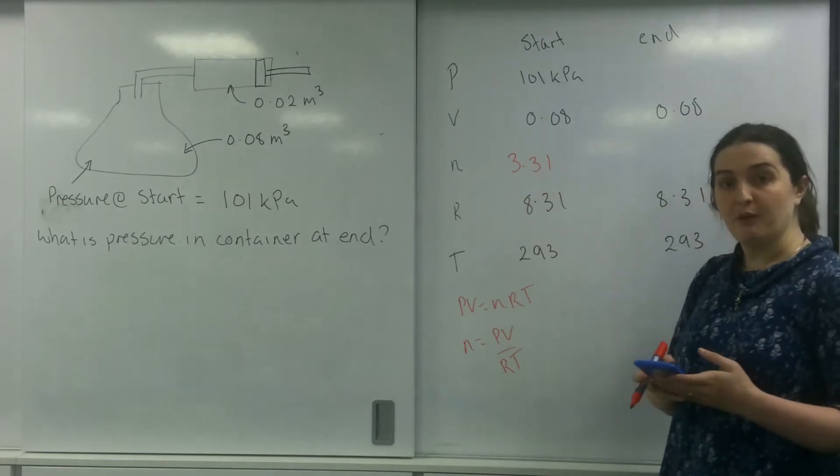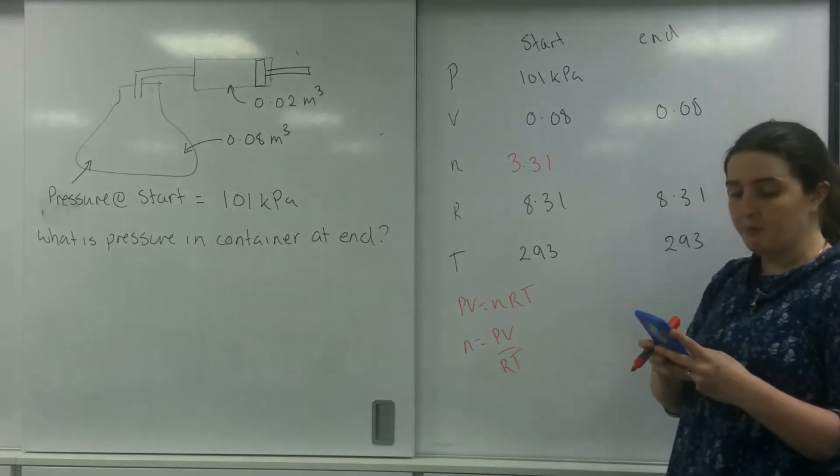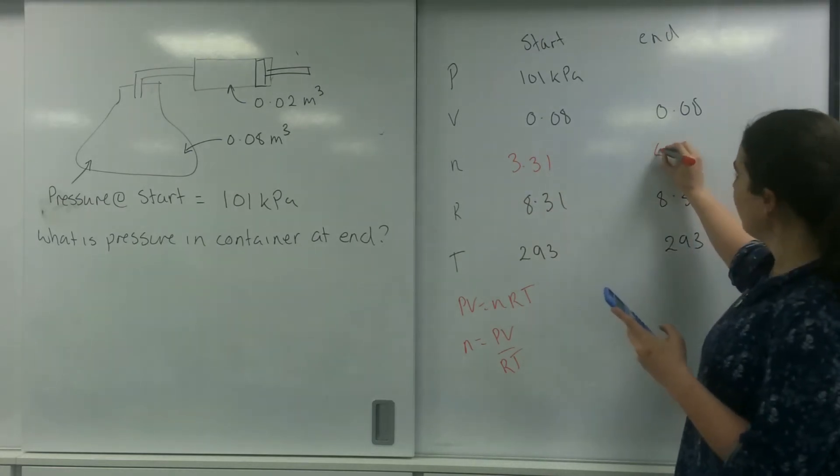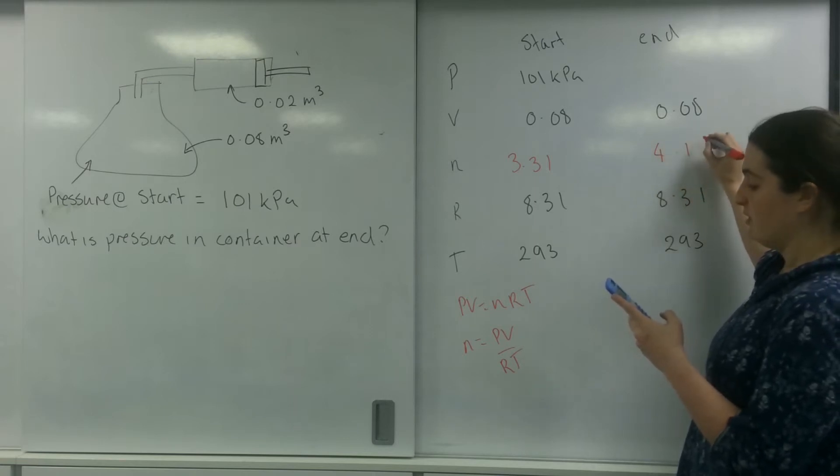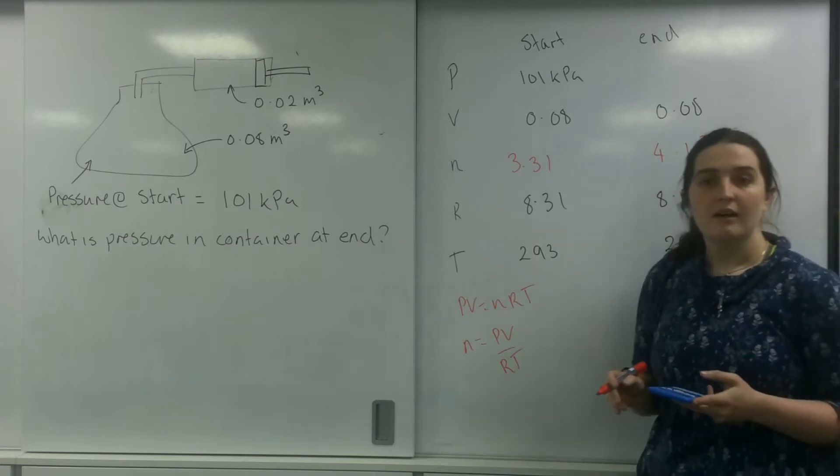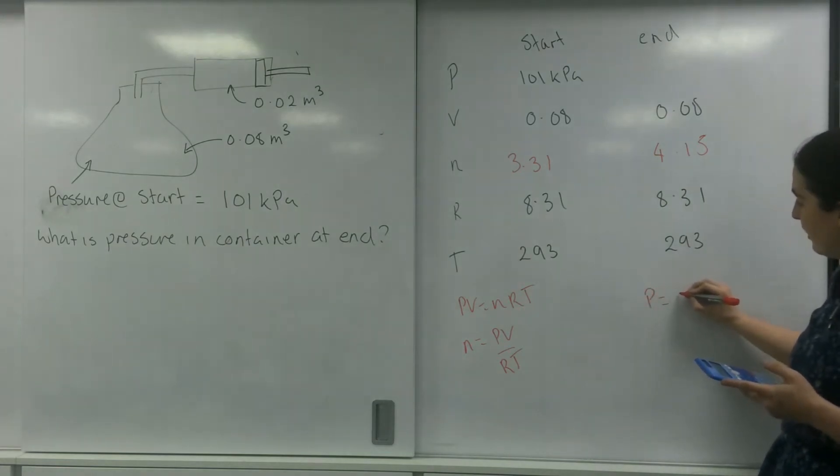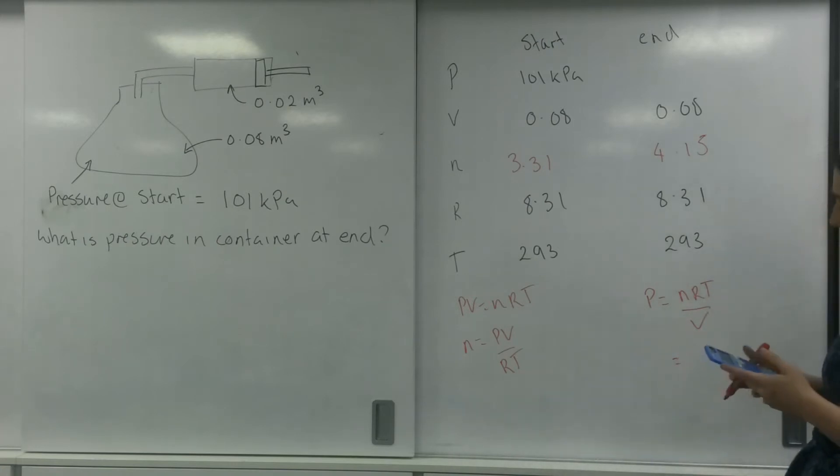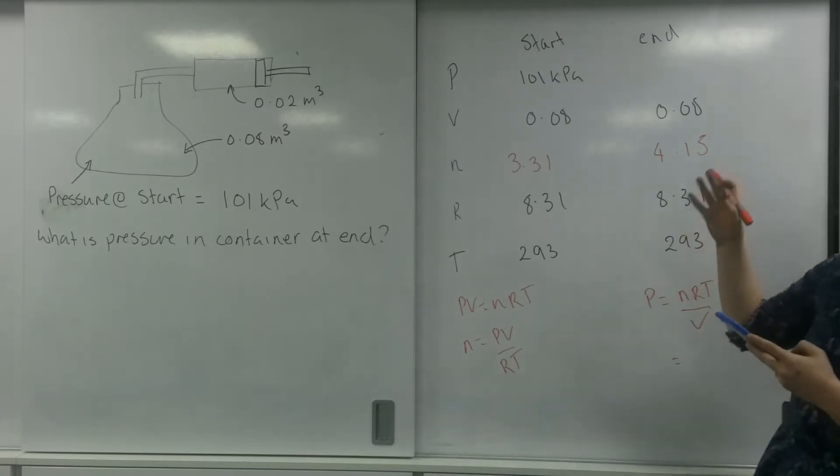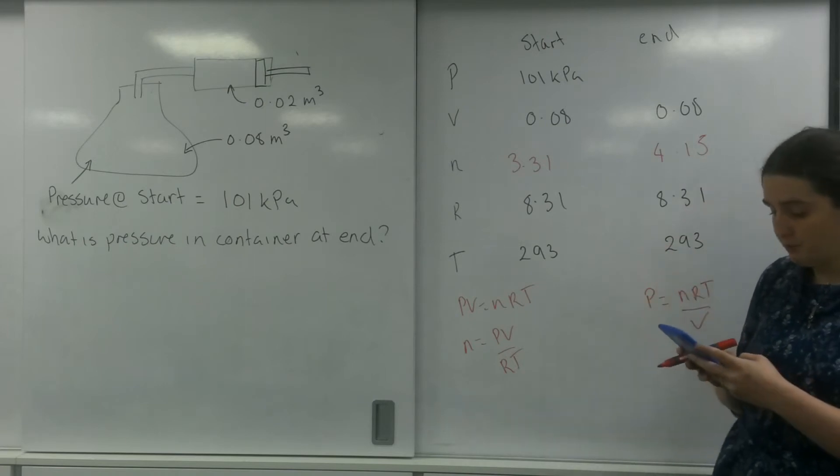So this n is going to increase by 25%. So let's times that by 1.25, and my n here is 4.15. I can then use this formula that I did before. Pressure is nRT over V to work out my new pressure. So 4.14 times by 8.31 times by 293 divided by my volume because my volume of the flask hasn't changed, 0.08.